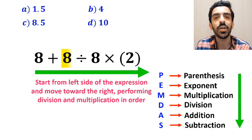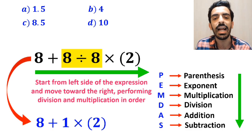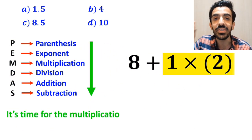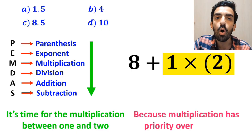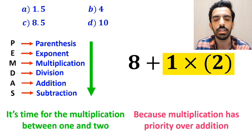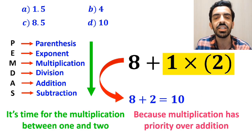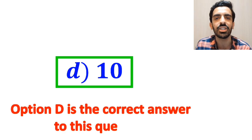First we perform the division between 8 and 8, which simplifies the expression to 8 plus 1 then times 2. In the next step it's time for the multiplication between 1 and 2, because multiplication has priority over addition. So instead of this expression we can write 8 plus 2, which ultimately gives us the answer 10. Therefore, option D is the correct answer to this question.